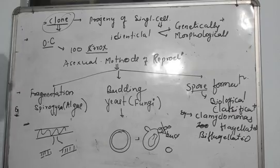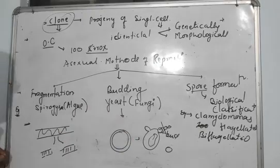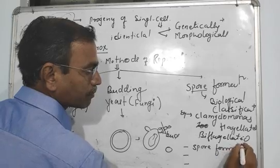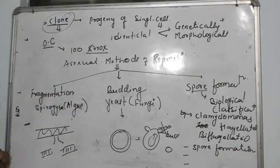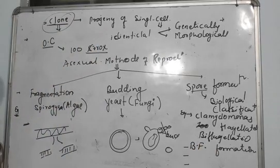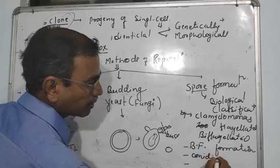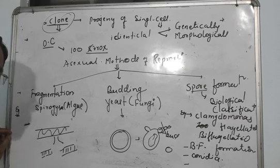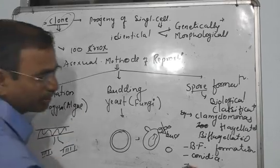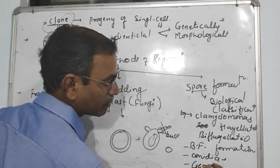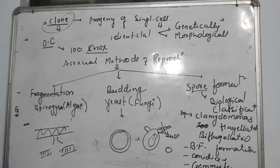Now there are other methods. Major methods: spore formation, binary fission, conidia formation. For conidia, go back to biological classification - fungi has four groups. After conidia formation, next we have gemma formation. So these all are the methods where asexual reproduction is discussed.